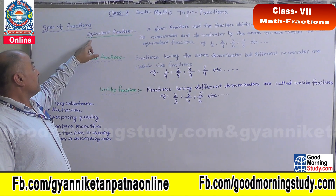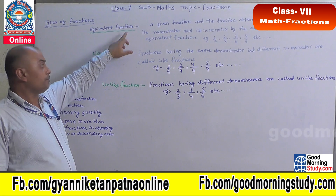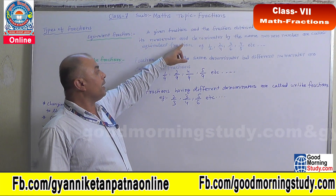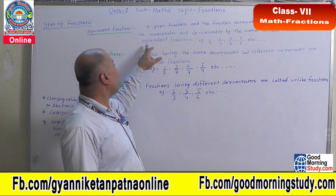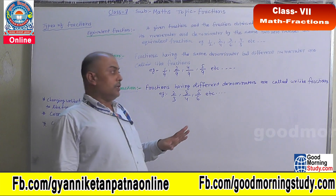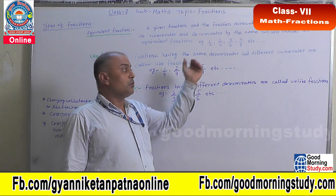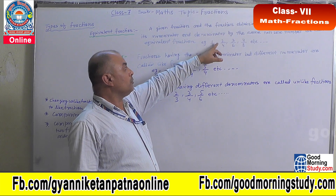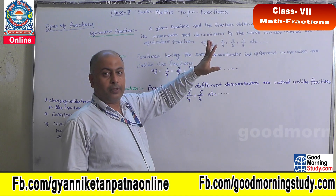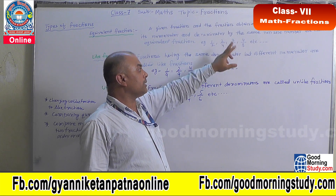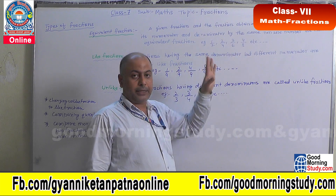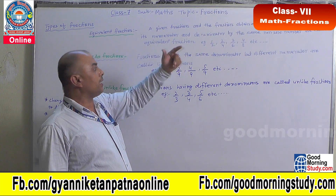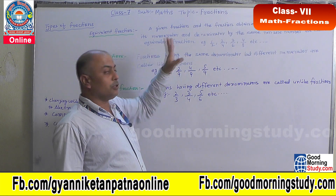The first type of fraction is equivalent fractions. A given fraction and the fraction obtained by multiplying or dividing its numerator and denominator by the same non-zero number are called equivalent fractions. For example, given 1 by 2, we multiply by 2 by 2 to get 2 by 4, multiply by 3 by 3 to get 3 by 6, multiply by 4 by 4 to get 4 by 8. So, multiplying or dividing numerator and denominator by the same non-zero number gives equivalent fractions.